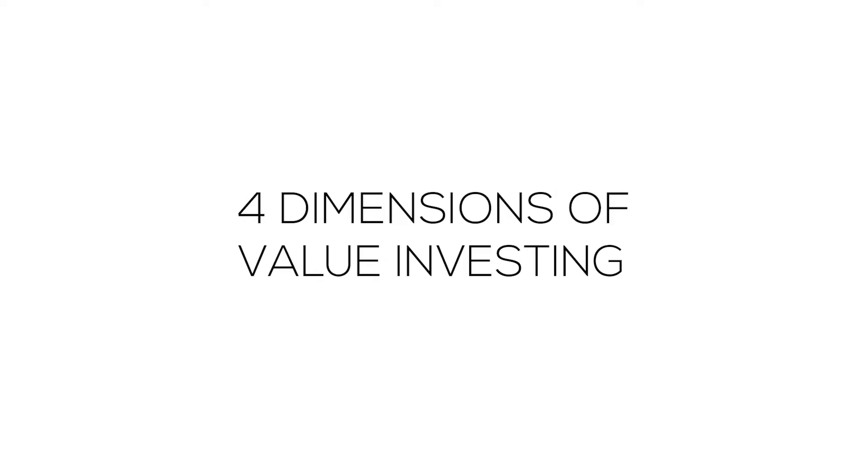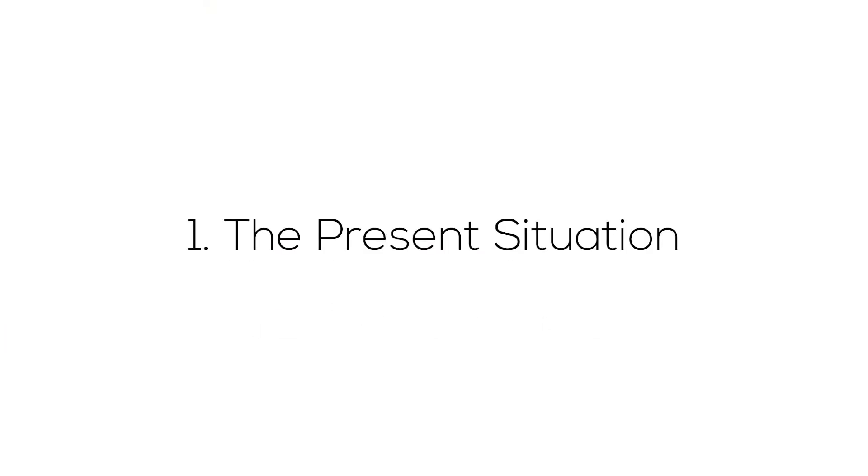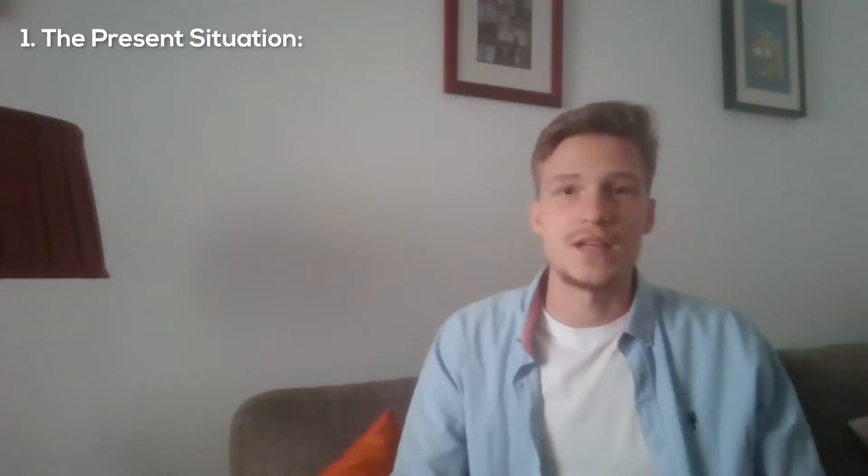In his book he describes basically the four dimensions of value investing when it comes to growth companies, and in this video we're going to be taking a look at those four different dimensions and how we can apply his knowledge into our daily investment strategies. The first dimension is the present value, or the present situation of the company.